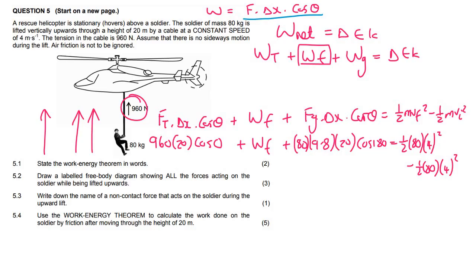What we now end up with is 19,200 plus WF minus 15,680 equals to 0, because those would cancel out. If you work out WF now, you would get 15,680 minus 19,200. That's going to give us negative 3,520 joules. That is the answer.